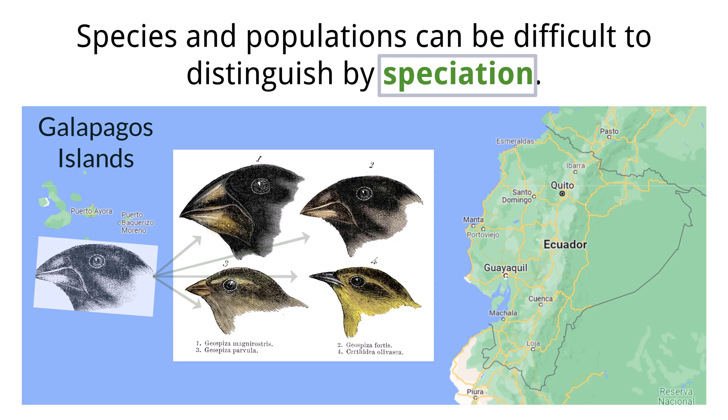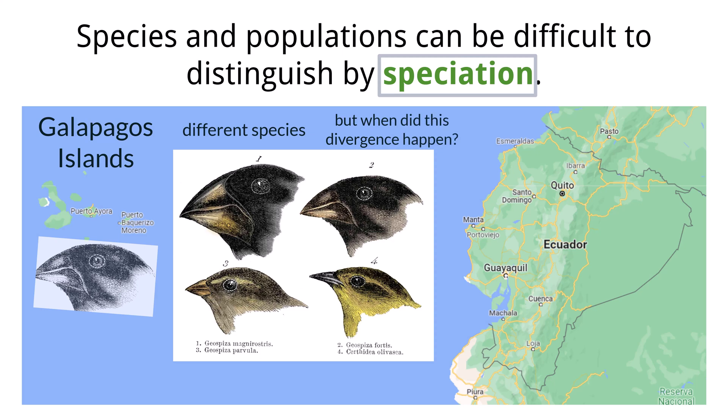So yes, we can say that there are different species of finches here, but at what point could we call them different species? After 1 million years of adapting, 500,000 years of adapting — how many different traits must they have for us to be sure? Because the process of change in this example is slow and gradual, to pinpoint the exact moment that the divergence took place is difficult and up for interpretation.